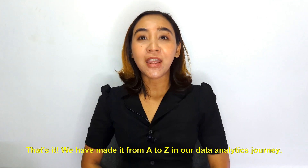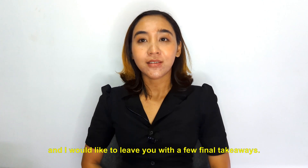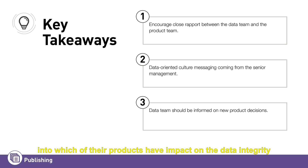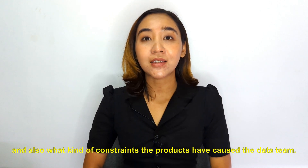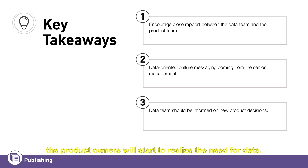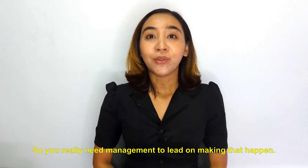That's it — we have made it from A to Z in our data analytics journey. A few final takeaways: the data team needs to understand what business problem the business team is trying to solve, and the product team needs visibility into which products impact data integrity. When management asks product owners where the data is that backs up their assumptions, product owners start to realize the need for data and begin looking for it — that is when data-oriented problem solving begins to permeate the organization. Management needs to lead on making that happen.